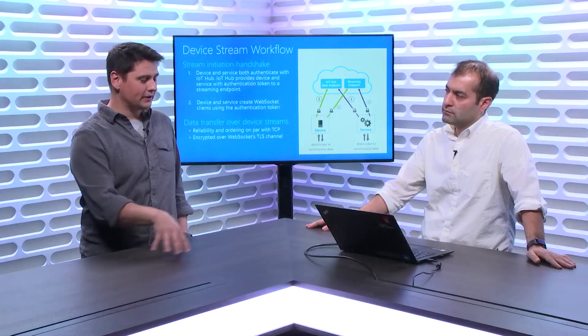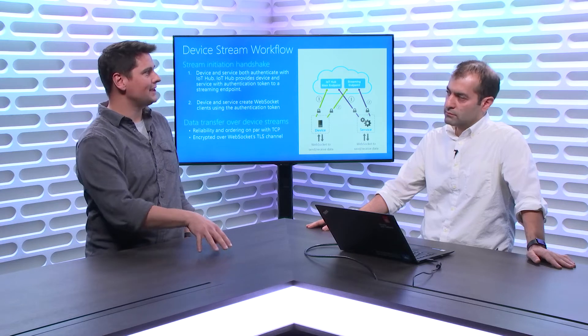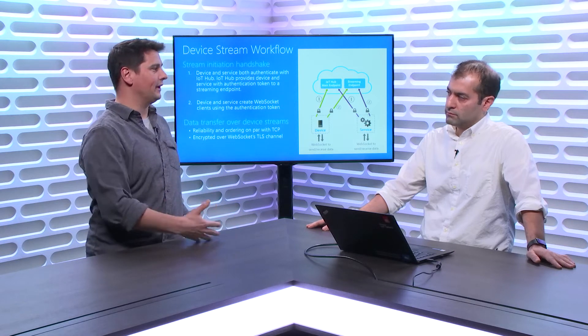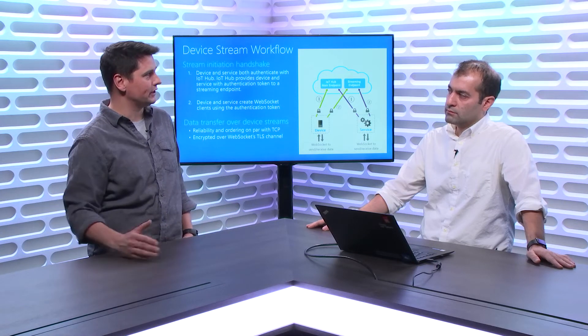On the service side you would use the IoT Hub service SDK, and on the device side the device SDK. Applications have two ways to use Device Streams. One is programmatic integration through our SDK — calling our APIs to initiate Device Streams, do the handshake, and ultimately receive the WebSocket client to send and receive data.